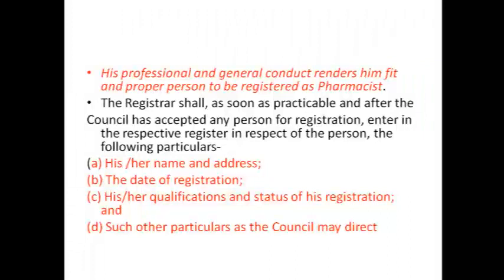The second particular is the date of registration. The personal particulars that the registrar must enter in the register to identify pharmaceutical personnel are: (a) his or her name and address, (b) the date of registration, (c) his or her qualification and the status of his registration, and (d) such other particulars as the council may direct — for example, additional qualifications or other relevant information related to the pharmaceutical personnel.